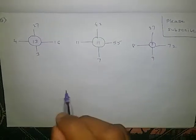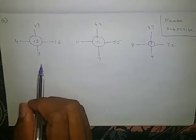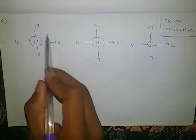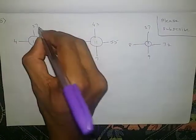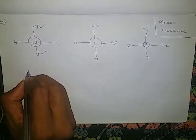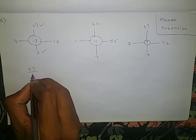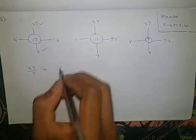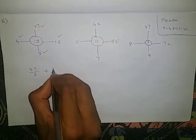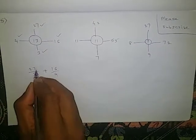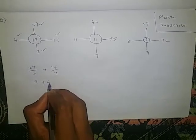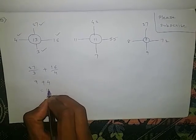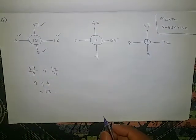Let us take one more question. 4, 16, 27, 3 — I will do division. 27 by 3 plus 16 by 4. 27 by 3 is 9, plus 16 by 4 is 4. 9 plus 4 is 13. That is the middle number.